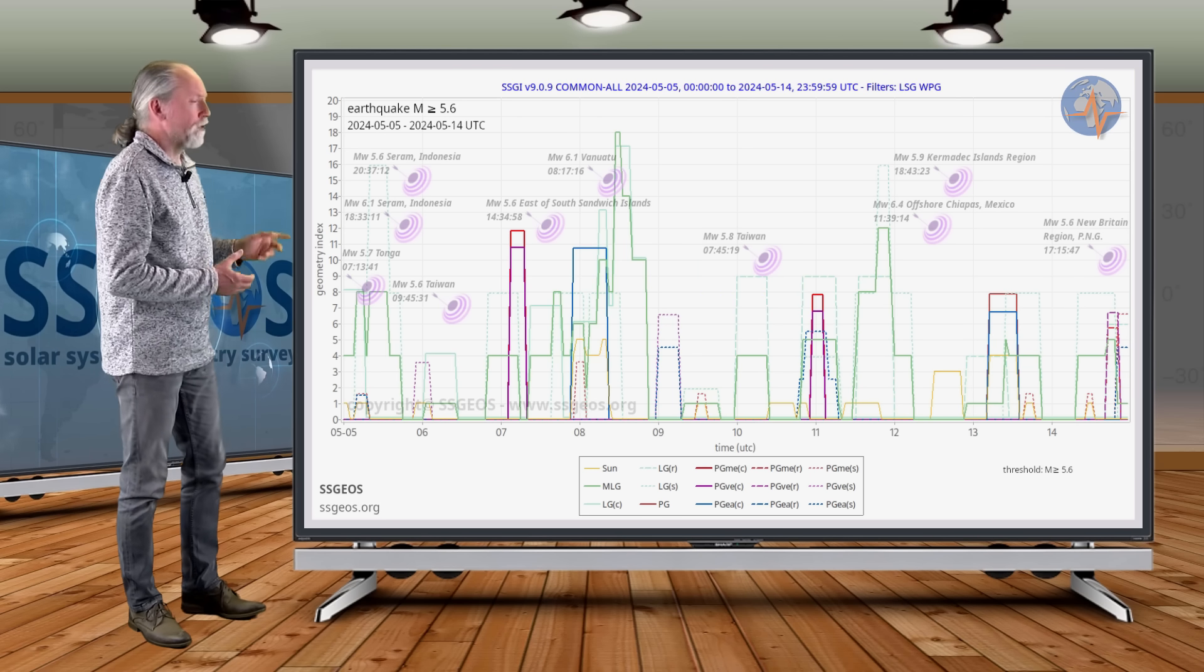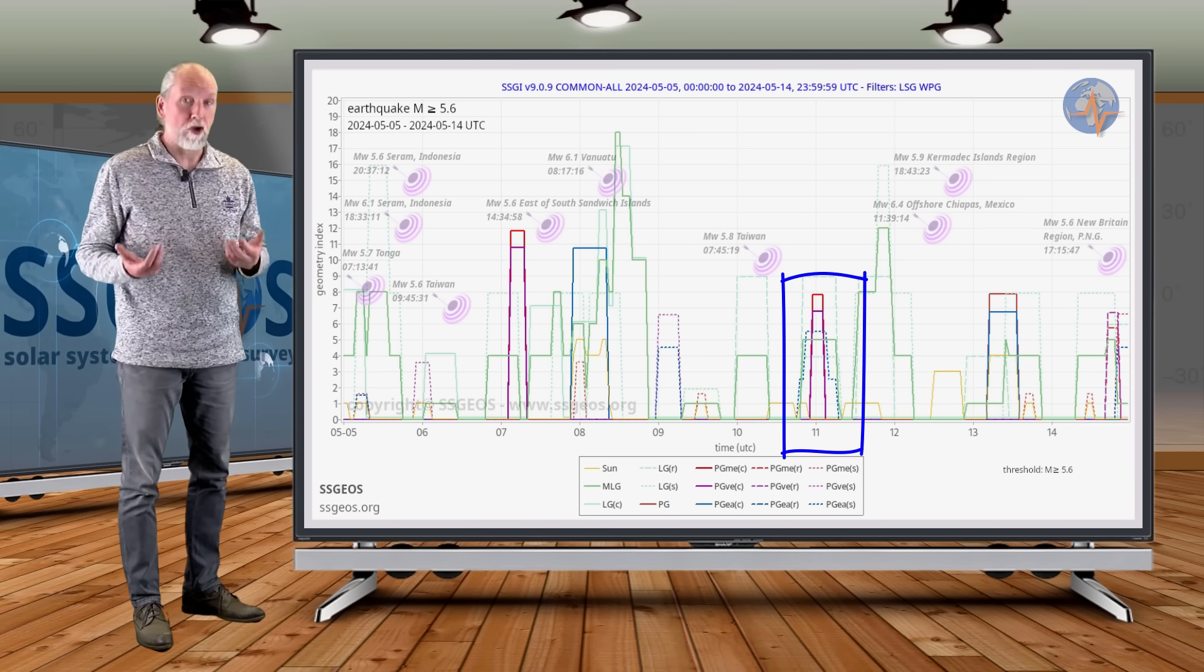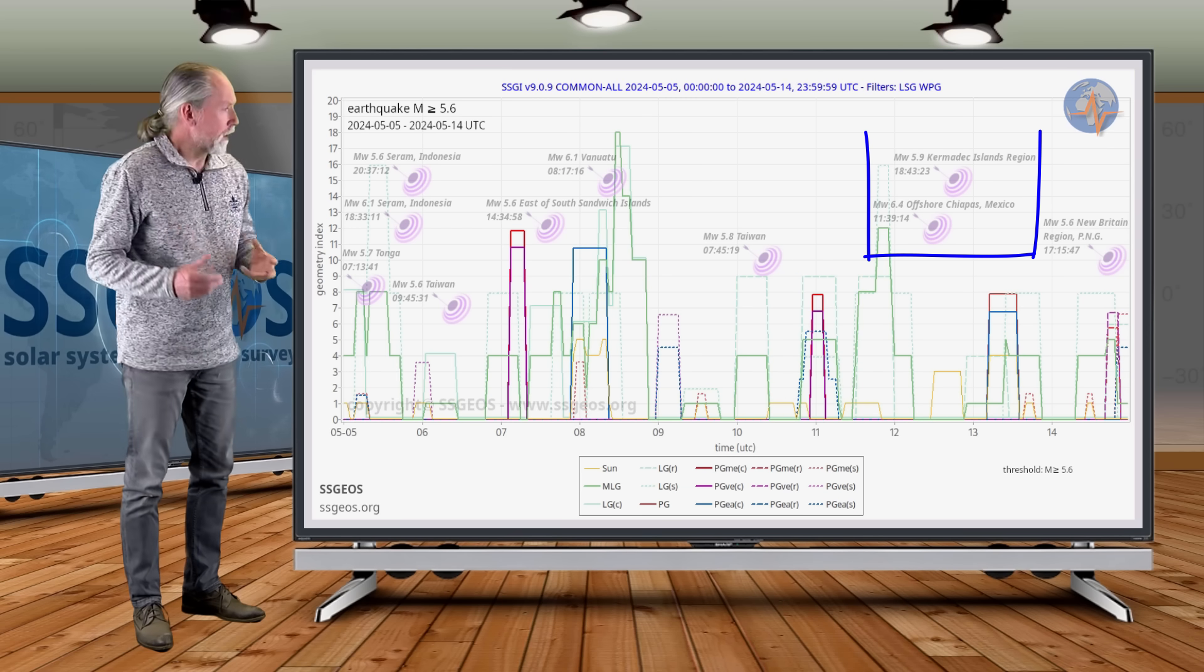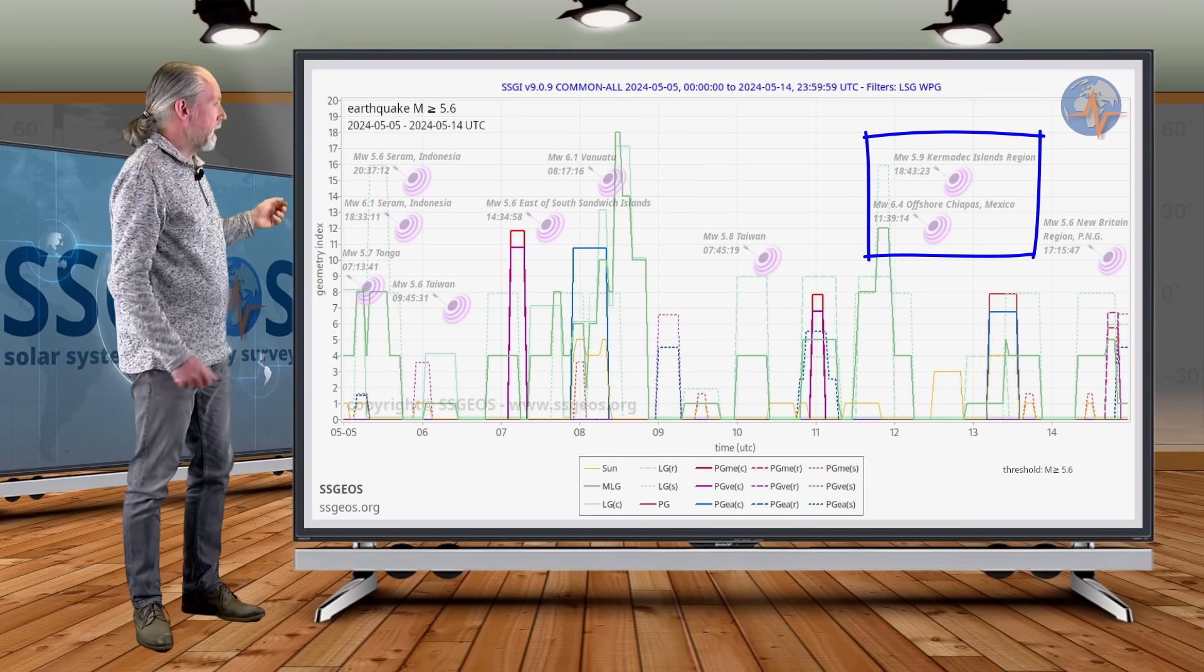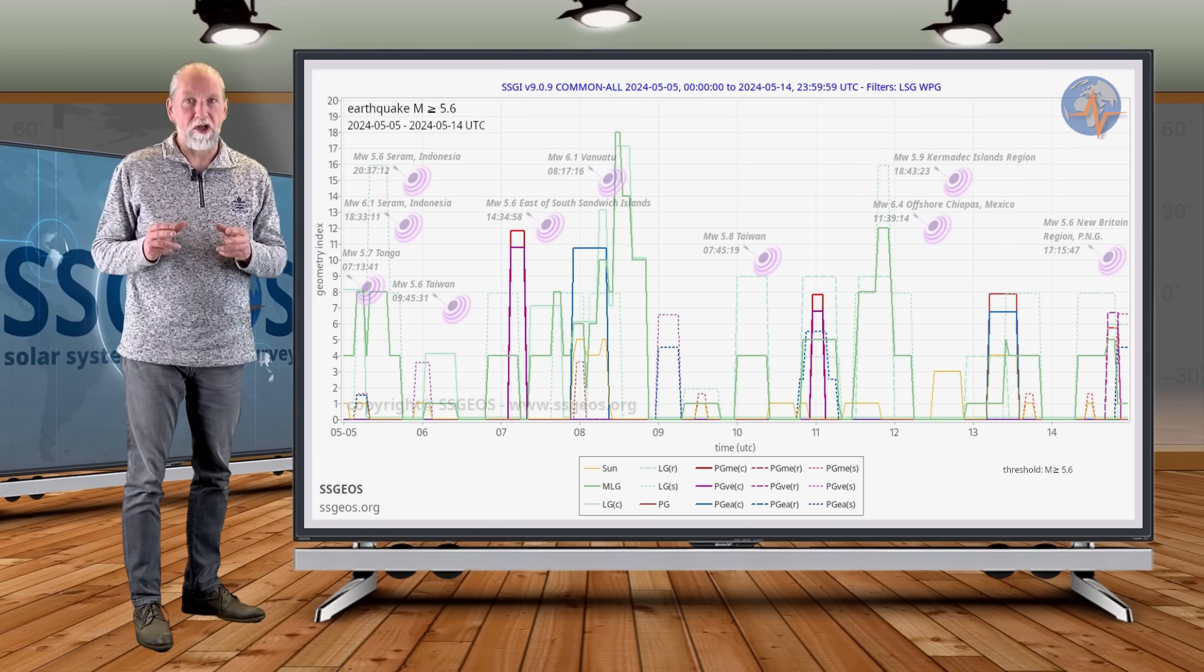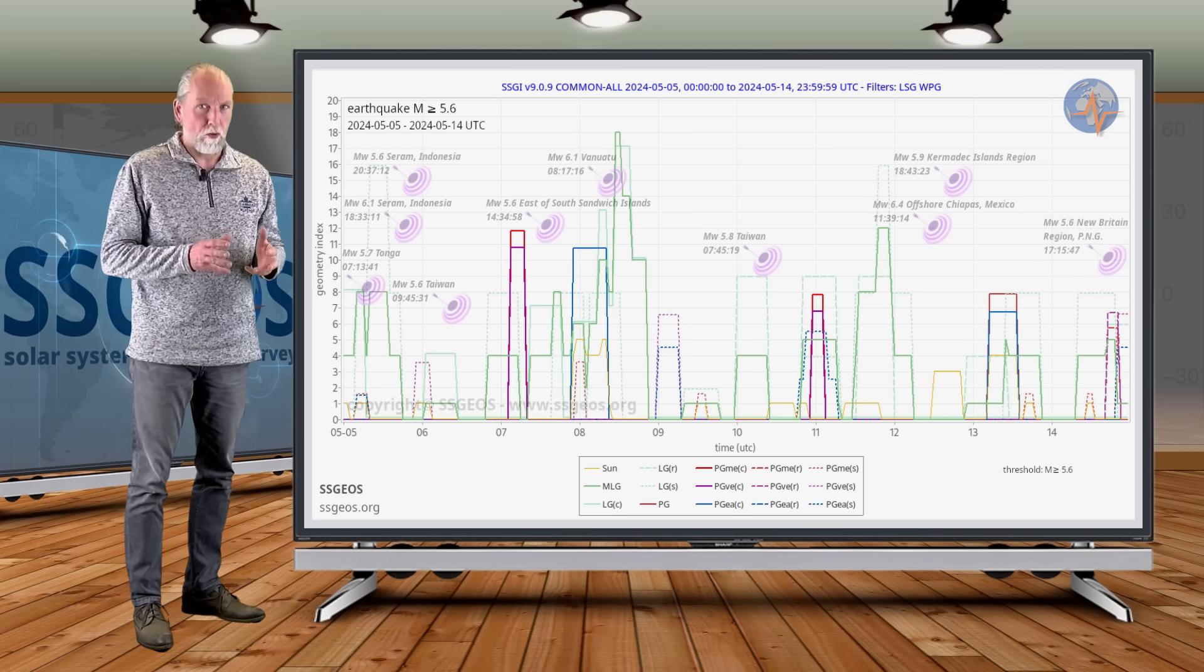Then on the 11th we had Mercury-Venus again in conjunction with Jupiter. We actually see some minimal clustering, but stronger, two days later on the 12th. That was 6.4 offshore Chiapas, Mexico, which did have an atmospheric fluctuation four days before the earthquake occurred.